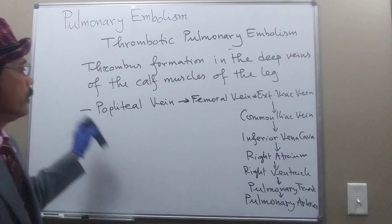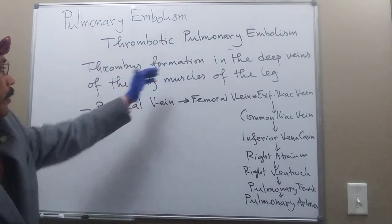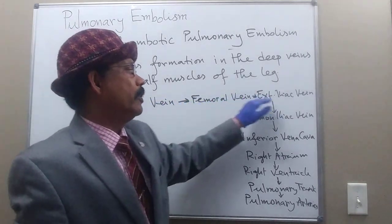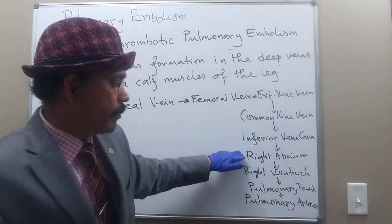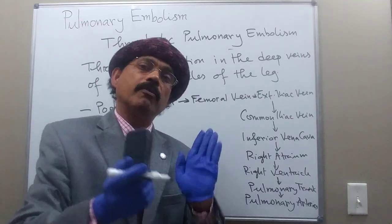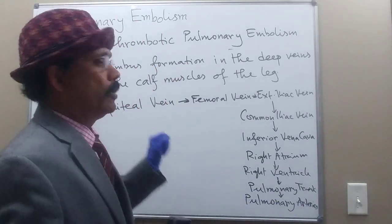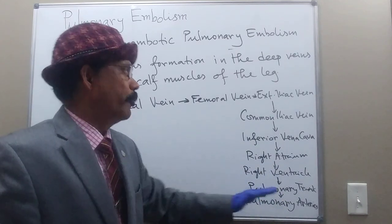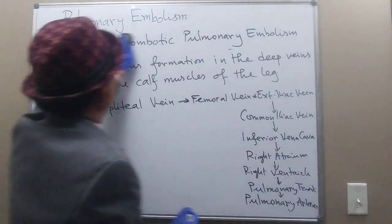So the pathway is: from the calf muscle veins, the embolus travels to the femoral vein, external iliac vein, common iliac vein, inferior vena cava, right atrium, right ventricle, pulmonary trunk, and then the left and right pulmonary arteries. The embolus may block at the pulmonary trunk bifurcation or pulmonary artery — this is pulmonary embolism.